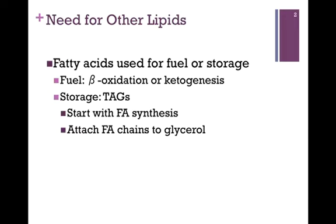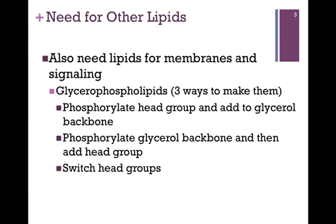We'll start with fatty acid synthesis, but then we need to attach those fatty acid chains to glycerol in order to store them as triacylglycerols. Other than fatty acids and triacylglycerols, we need other types of lipids — primarily glycerophospholipids — for membranes as well as for signaling, as we saw in Chapter 10. There are three ways to make glycerophospholipids: we may first phosphorylate a head group and attach it to a glycerol backbone, phosphorylate the backbone and then attach the head group, or exchange head groups on an existing glycerophospholipid.